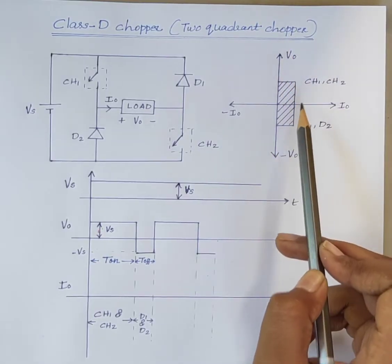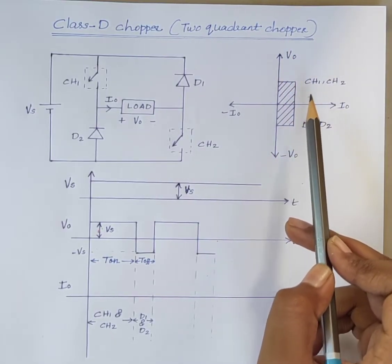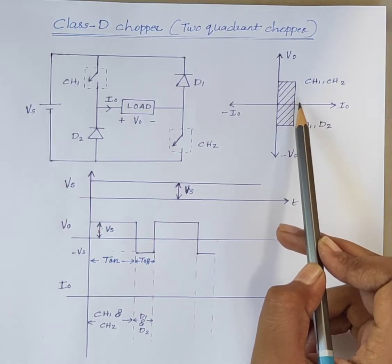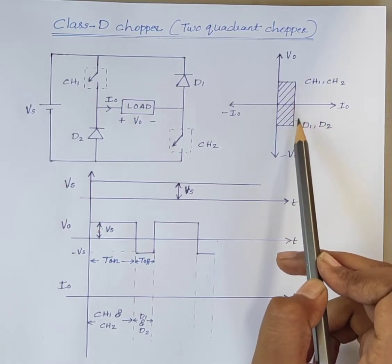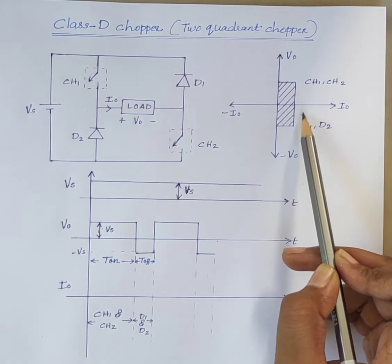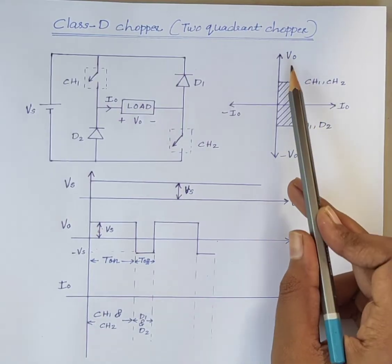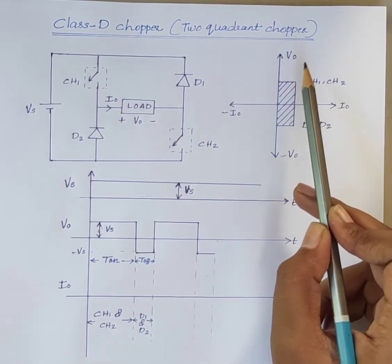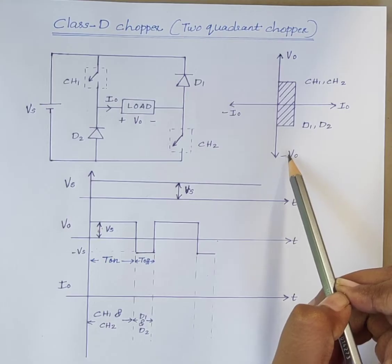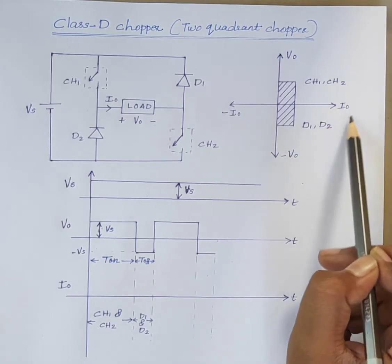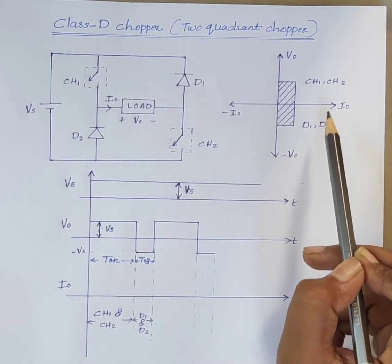The operation of this type of chopper is confined to the first and fourth quadrant. This means the output voltage V0 is either positive or negative and the output current I0 is always positive.